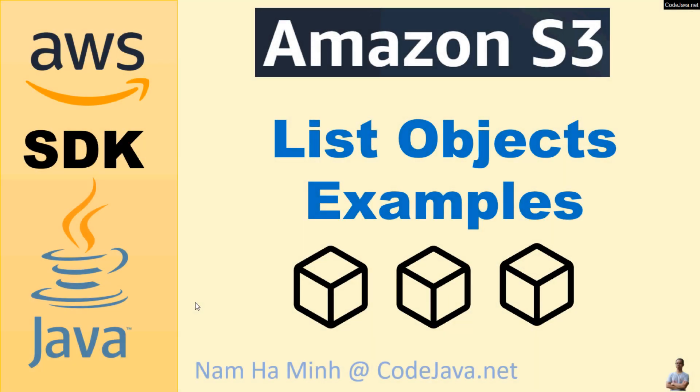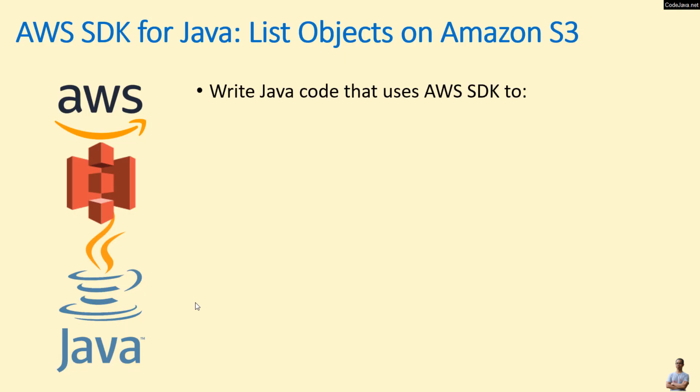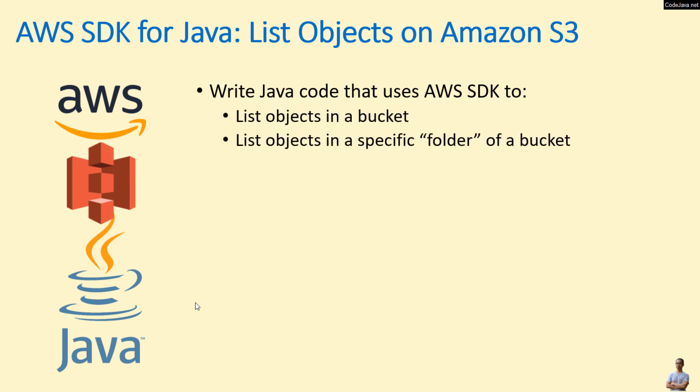Hi, welcome to the video: Amazon S3 List Objects Examples using AWS SDK for Java. I am Nam Hamming from CodeJava.net. Through this video, you will learn how to write Java code that uses Amazon Web Services Software Development Kit, or AWS SDK, to list objects in a bucket and list objects in a specific folder of a bucket.